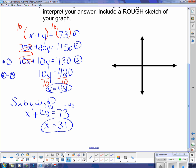So that means we have 31, and remember x was $10 bills, and 42 $20 bills.